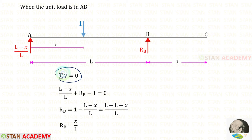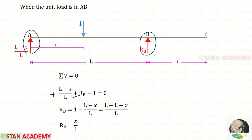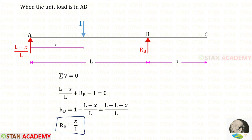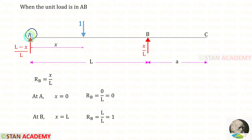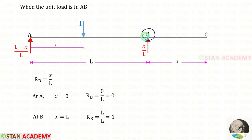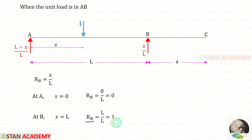Now let us apply this rule and find RB. RA and RB are acting upwards, so both of them are positive. The unit load is acting downwards so it will be negative. For RB, we will get x upon L. At point A, x will be 0, so RB equals 0. At point B, x will be L, so RB equals 1.